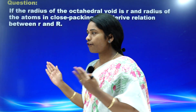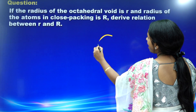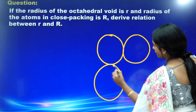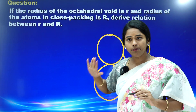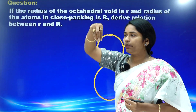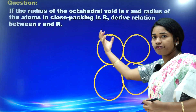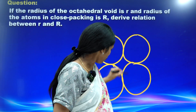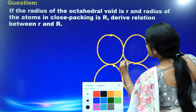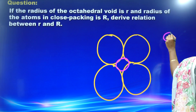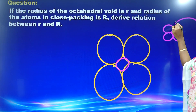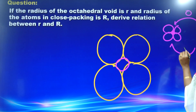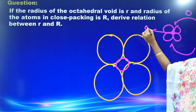Octahedral void — let us see how it will form. For example, there are four spheres in one plane, one atom above the plane, and one atom from below. There will be total six atoms, and between these six atoms, there is a void. So, total four atoms in one plane, one above the plane, one below the plane — between these six atoms, there is a void. That void is called the octahedral void.